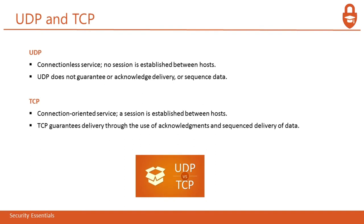Comparing UDP and TCP: UDP is a connectionless service — no session is established between hosts. It does not guarantee or acknowledge delivery or sequence data. However, TCP is a connection-oriented service. A session is established between hosts, and TCP guarantees delivery through the use of acknowledgements and sequenced delivery of data. TCP works on a three-way handshake, whereas UDP does not. TCP works through acknowledgement while UDP does not — UDP is only a broadcast.